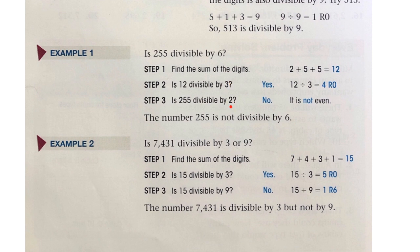Example 2: Is 7,431 divisible by 3 or 9? Step 1, find the sum of the digits: 7 plus 4 plus 3 plus 1 is 15. Step 2, is 15 divisible by 3? Yes — 15 divided by 3 is 5, no remainder. Is 15 also divisible by 9? No, because 15 divided by 9 is 1 remainder 6. So 7,431 is divisible by 3 but not by 9.